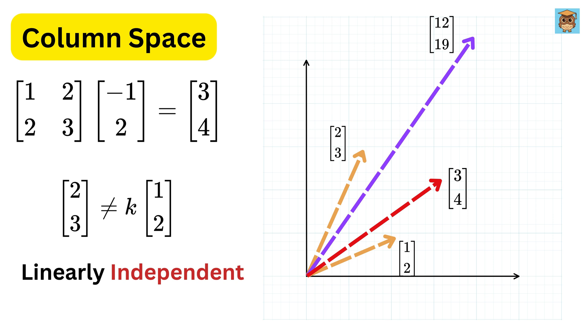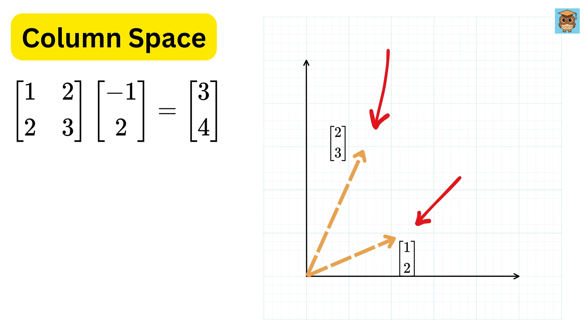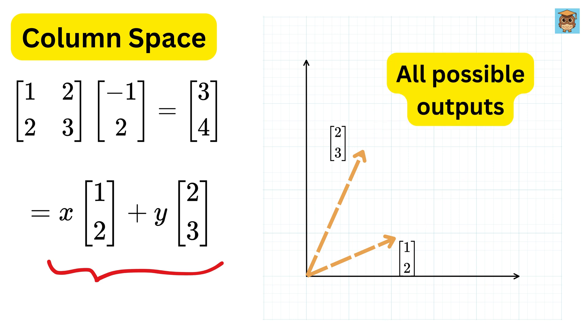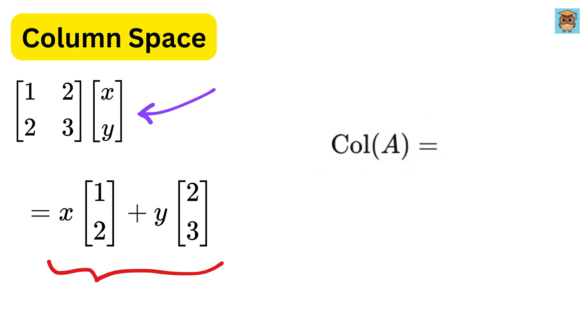Why? Because its columns are linearly independent. That means they point in different directions, and together, they can cover the whole plane through linear combinations. So, if you imagine all possible outputs you can get from this matrix, by plugging in every possible input vector, you'd get the entire 2D space. Thus, the column space of the matrix is all of R squared, which we write like this. So, it's not just a line anymore. It's the whole plane.